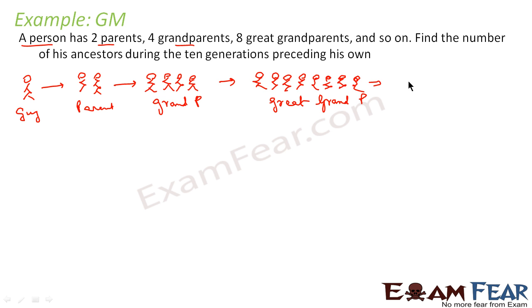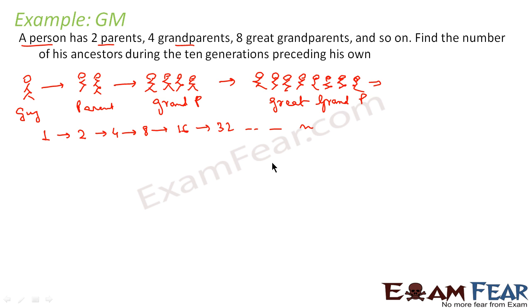Similarly, this will be 16, and so on. If you write in mathematical form: 1, 2, 4, 8, 16, 32... Now if you observe clearly, this is a GP because if you divide 2 by 1 you get 2; 4 by 2 you get 2; 8 by 4 you get 2; 16 by 8 gives 2; 32 by 16 gives 2.